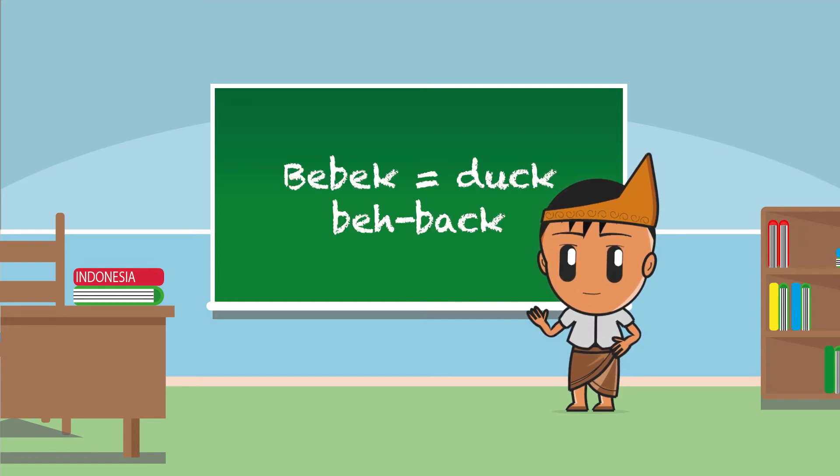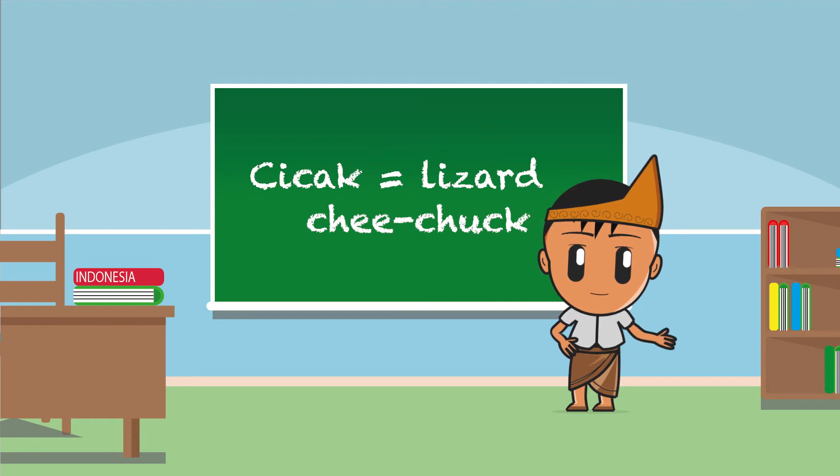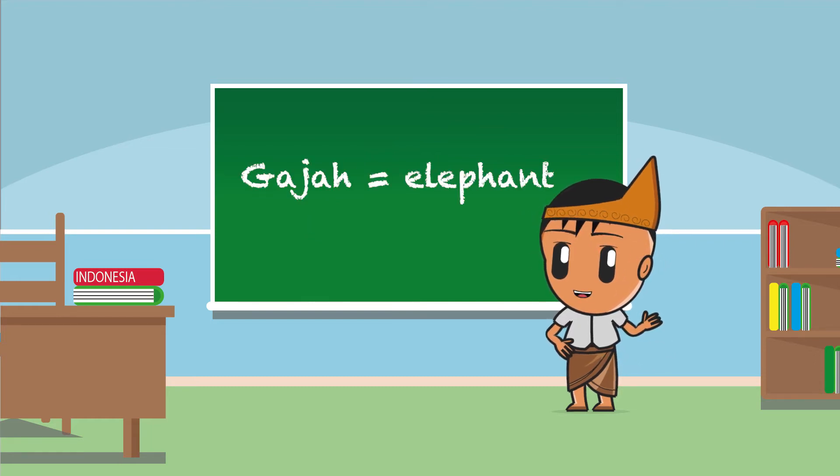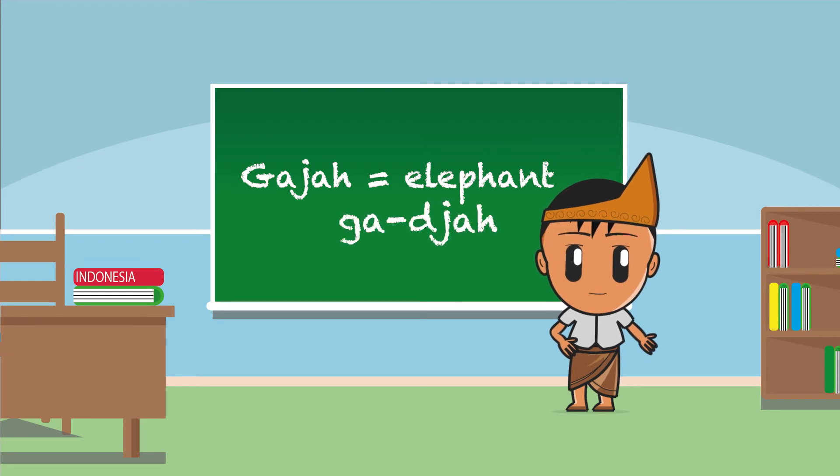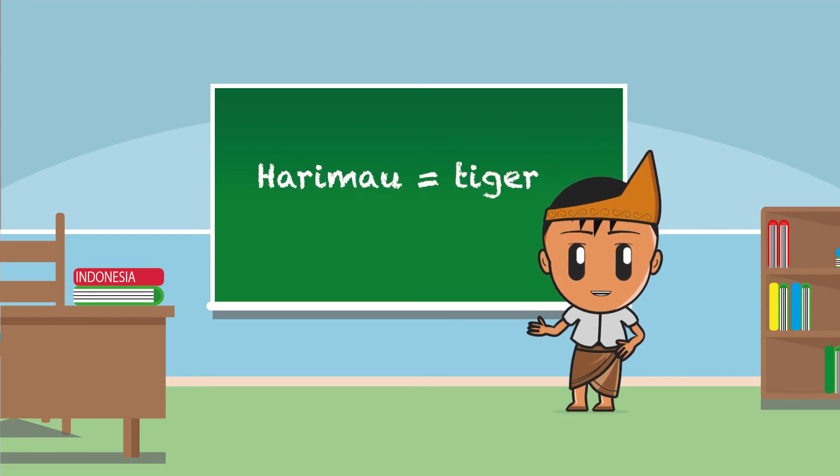Cicak means lizard, chi-chak. Gajah means elephant, ga-ja. Harimau means tiger, ha-ri-ma-u, harimau.